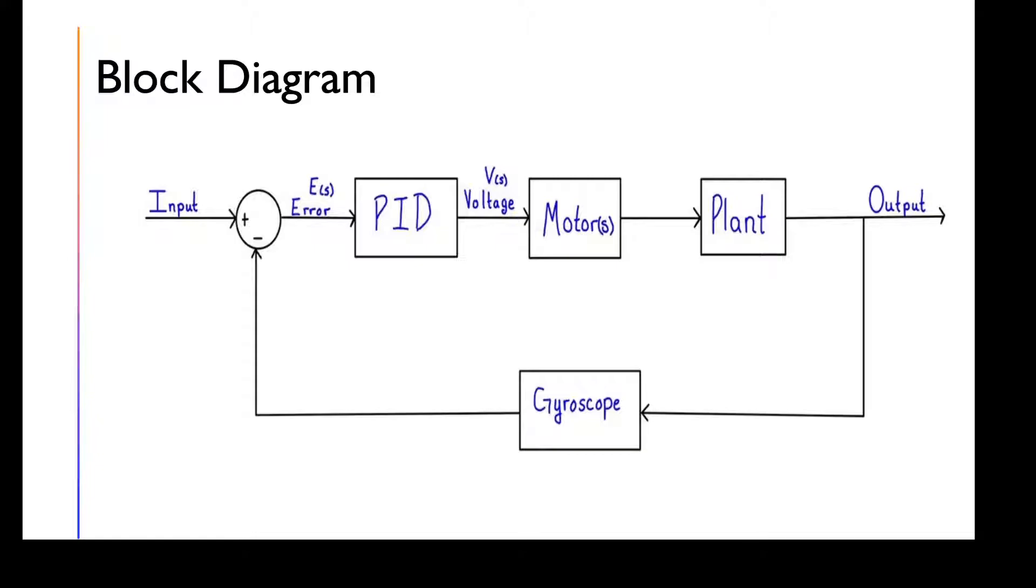When those add and subtract, we get the error of the angle that goes into the PID controller, which turns that into a voltage to tell the motors to rotate a certain amount. That goes into our plant, our transfer equation, which produces an angle.